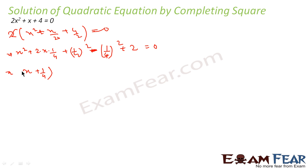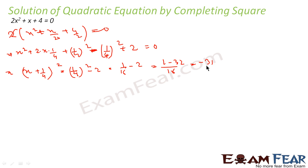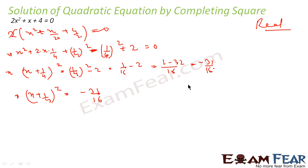This becomes (x + 1/4)² = (1/4)² − 2, that is 1/16 − 2. With a common denominator of 16, this is (1 − 32)/16 = −31/16. So (x + 1/4)² equals −31/16. A square of a number being negative is not possible for real numbers.